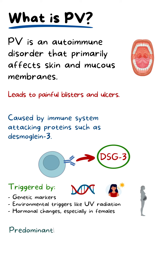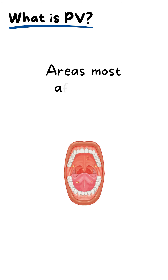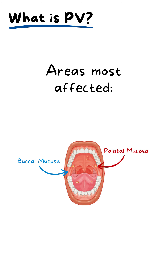PV mainly affects adults between 40 and 60 years of age, with a slight female inclination, and commonly impacts certain ethnic groups. The areas most affected in the oral cavity are the buccal, palatal, and lingual mucosa.